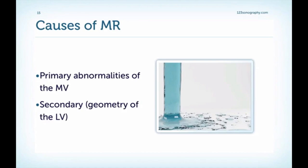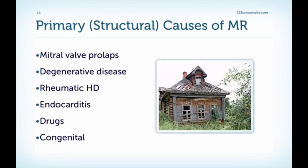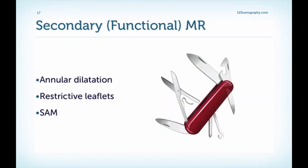We can classify MR as either primary or secondary. Primary means we have an abnormality of the mitral valve itself, and secondary means we have some form of geometry change of the left ventricle which leads to an incompetent mitral valve. In the first case we have a structurally abnormal mitral valve; in the second case the mitral valve has normal morphology. Primary or structural causes of MR include mitral valve prolapse, degenerative disease, rheumatic heart disease, endocarditis, drugs, and congenital causes. Secondary or functional causes include annular dilatation, restrictive leaflets, and systolic anterior motion as seen in hypertrophic cardiomyopathy.